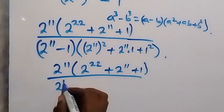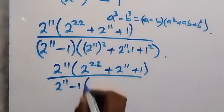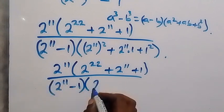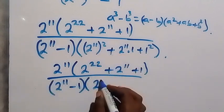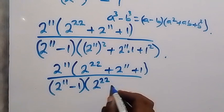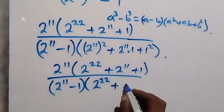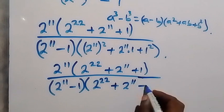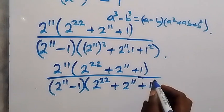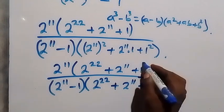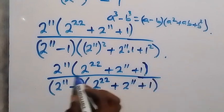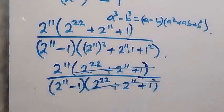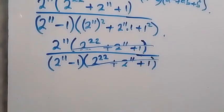This can also be simplified as 2 raised to power 11 into bracket: 2 raised to power 22 plus 2 raised to power 11 plus 1, over 2 raised to power 11 minus 1, into bracket: 2 raised to power 22 plus 2 raised to power 11 plus 1. When we look at these two brackets, they are the same — they cancel out.